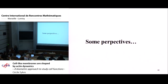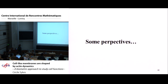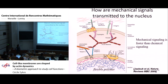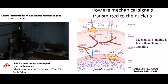As perspectives: three years ago we started a new project on how actin pulls on the nucleus. The nucleus has two membranes separating it from the cytoplasm. In the cytoplasm, actin filaments connect via integrins — which hold the cell on the extracellular matrix — to the nucleus. Pulling on the extracellular matrix pulls the integrin, which pulls actin, which pulls the nucleus through a protein complex called the LINC complex.